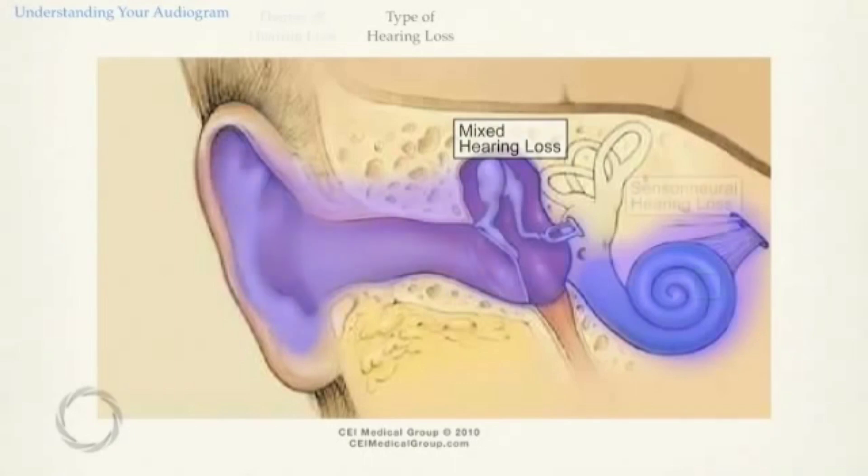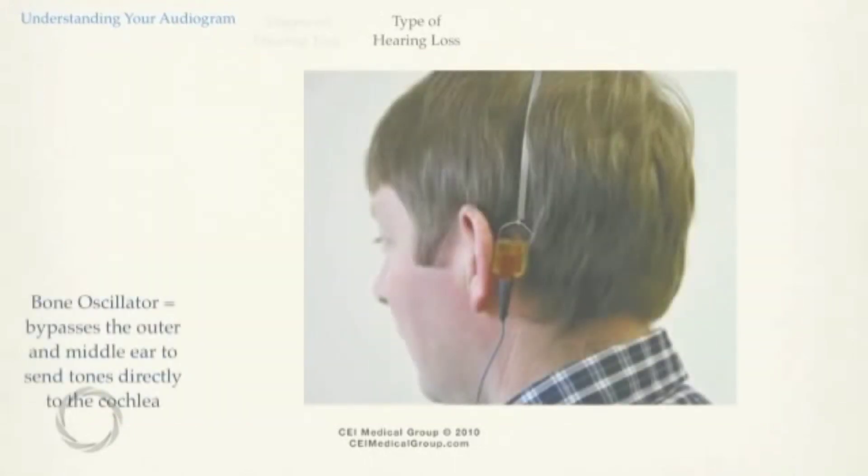Type of hearing loss is tested by placing a bone oscillator on the forehead. This device bypasses the outer and middle ear, sending tones directly to the cochlea.